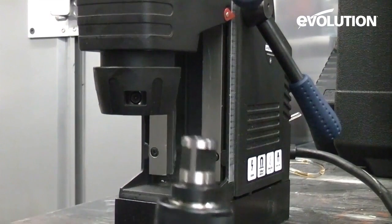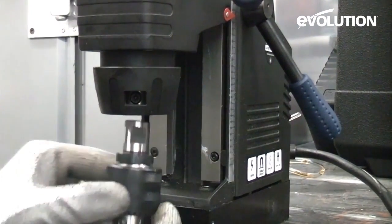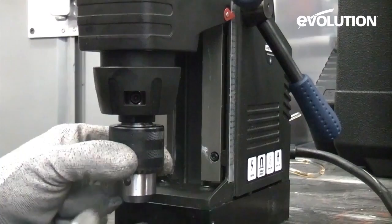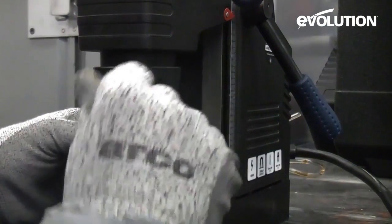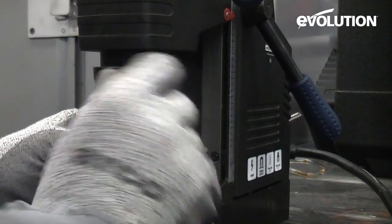Then this time we'll get the chuck, again ensuring that the two flats align with the two grub screws. Push that up and again tighten the two grub screws.